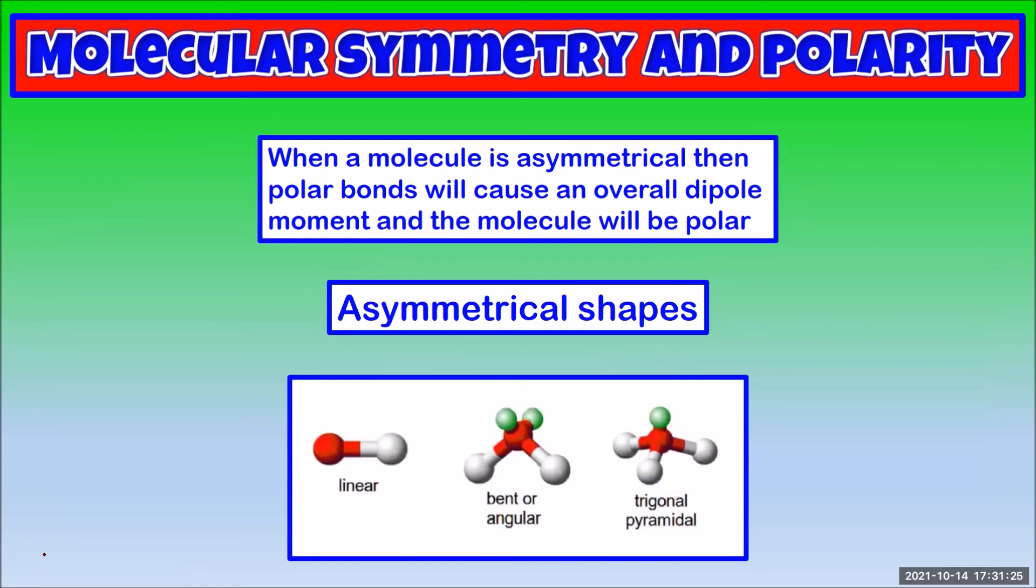When a molecule is asymmetrical, then the polar bonds will cause an overall dipole moment, and that molecule will be polar. The asymmetrical shapes that we've learned are the diatomic linear, bent, and trigonal pyramid.